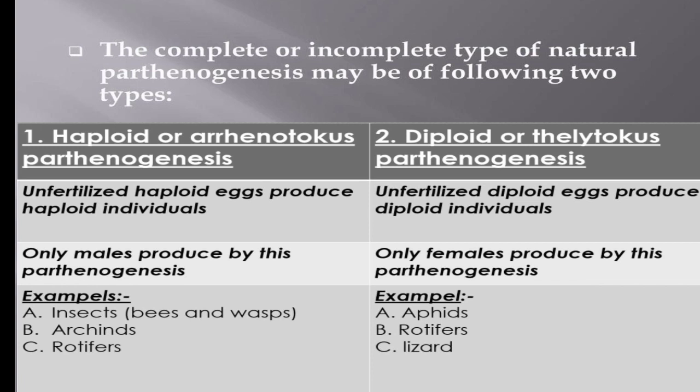In arrhenotoky parthenogenesis, the haploid eggs are not fertilized by sperm and develop into haploid individuals. Only males are produced by this parthenogenesis method. Examples include insects such as bees and wasps, sea urchins, and rotifers.